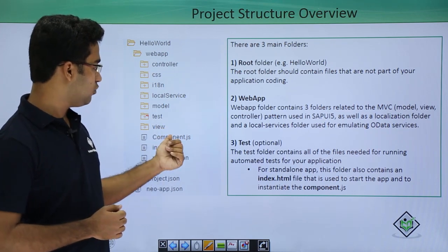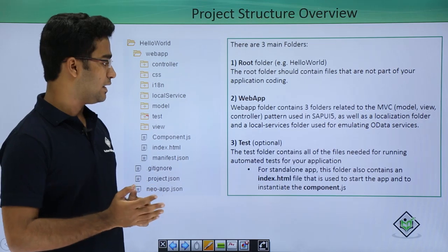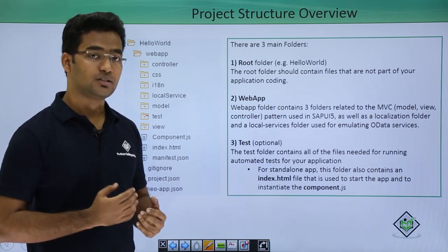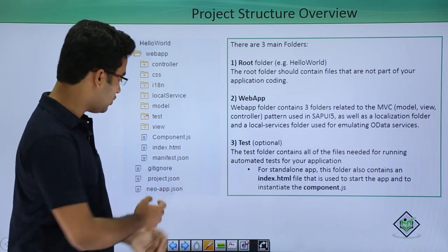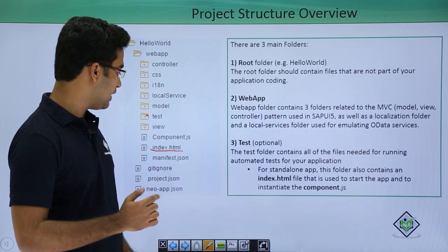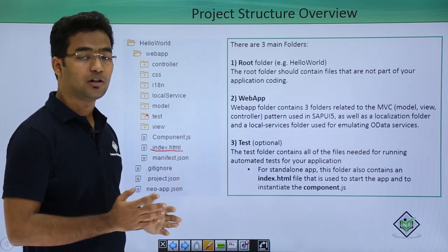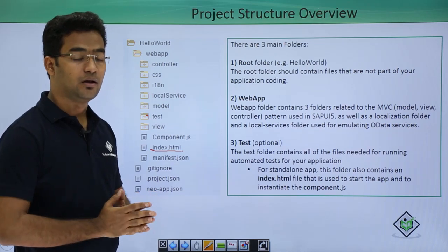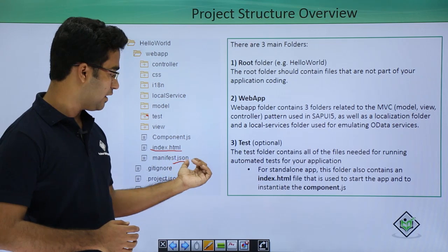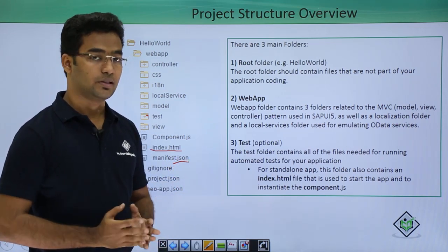The test folder contains all the application files needed to run automated tests for your application. For a standalone application, we have the index.html file which is instantiated, and control flows to the component.js file where all the metadata and project settings are defined. Then we have the manifest.json file which has the app descriptor of the project itself.